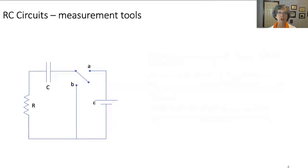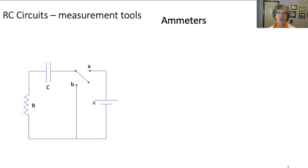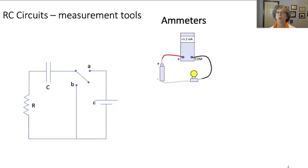Let's talk about measurement tools. Ammeters are tools that measure current. We'll be using conventional current in this lesson, which is defined as the flow of positive charge. You probably know that electrons, which are negative, are the actual charge carriers in a circuit, so conventional current is in the opposite direction of the movement of electrons. An ammeter is a very low resistance device that is wired in series with other components in a circuit so that current actually passes through it. Here is an example of a simple circuit containing a battery, a light bulb, and an ammeter.